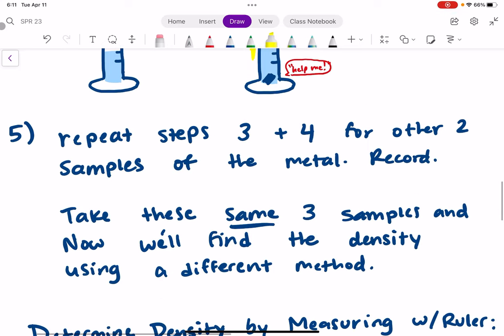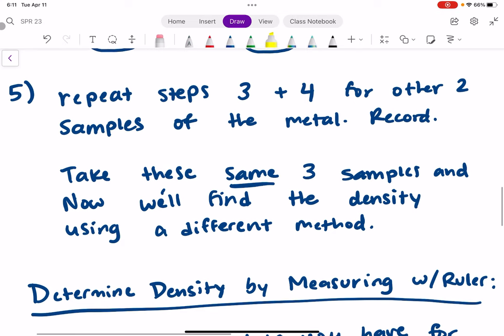For step five, you're going to repeat those last two steps for the other two samples of your metal. And then you're going to record your data.